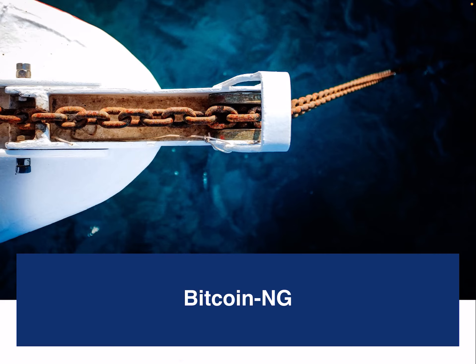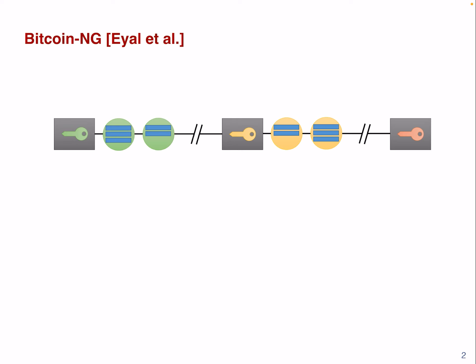Bitcoin-NG is a proposal by Eyal et al. on how to change the standard blockchain, the proof-of-work blockchain structure.